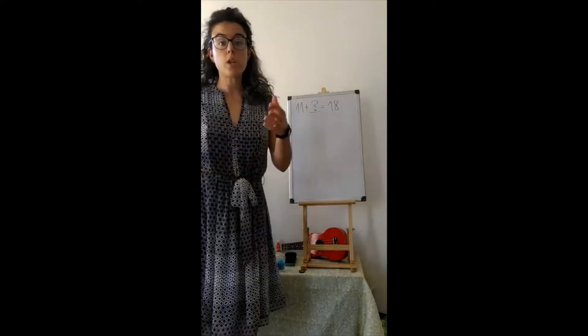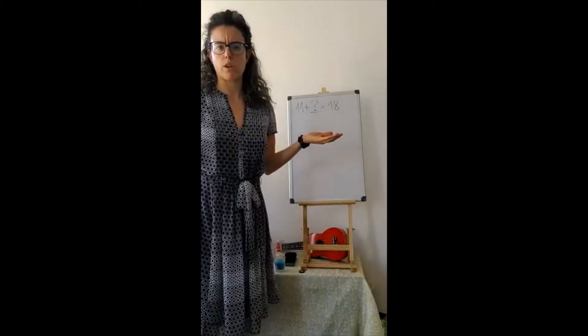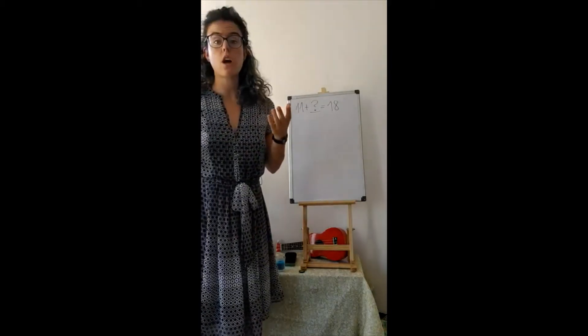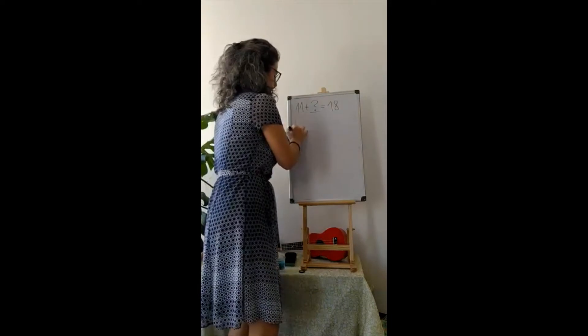So if you know the number already, that's great. But what happens if you don't know the number? Well, we can use a number line. Yeah? You guys know how to do a number line, right? We have eleven. We have eighteen. And we have to put all the numbers in between.